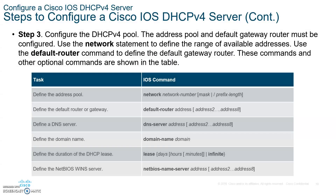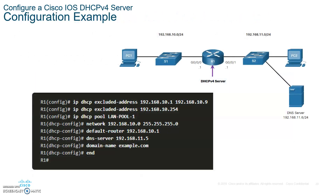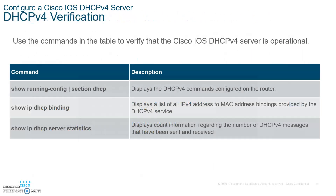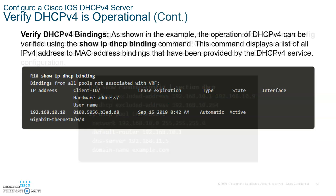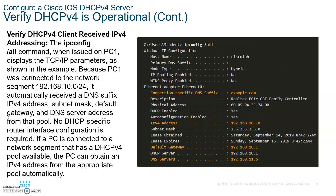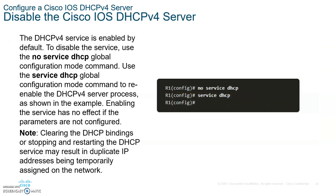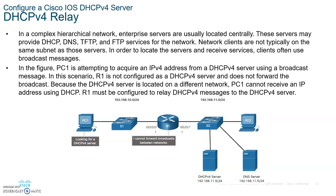Here's one important thing to write down before we get into the relay: clearing the DHCP binding, or stopping or restarting the DHCP server, may result in duplicate IP addresses being temporarily assigned on the network. Be very careful when doing that.